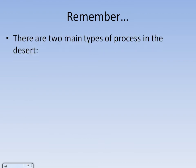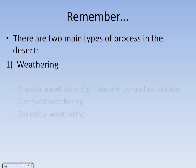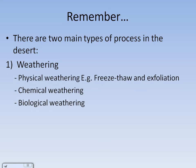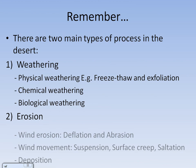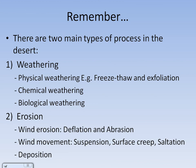To summarise, there are two main types of processes in the desert. Weathering is the breaking down of rocks, including physical, chemical and biological weathering. Erosion is the wearing away, which includes wind erosion — deflation and abrasion — and wind movement: suspension, surface creep and saltation. Remember the three S's. And deposition is when sand loses energy and is deposited on the floor.